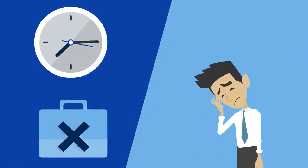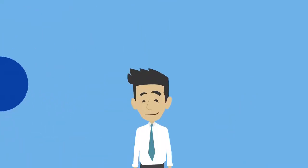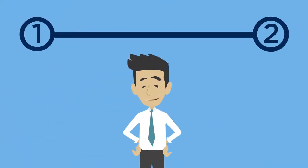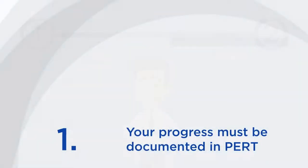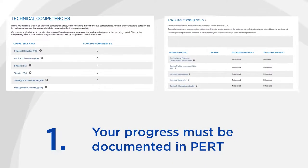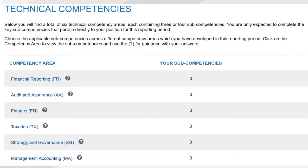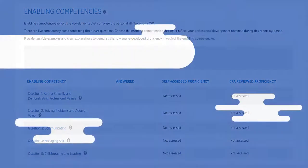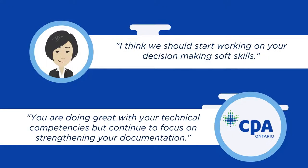Delaying your reporting can result in not being able to claim some of your relevant work experience. Once you set your PER start date, there are two important components to reporting your PE. First, your progress must be documented in PERT so we can make sure you're on track. Doing so will enable you to get valuable feedback from your mentor and CPA Ontario.